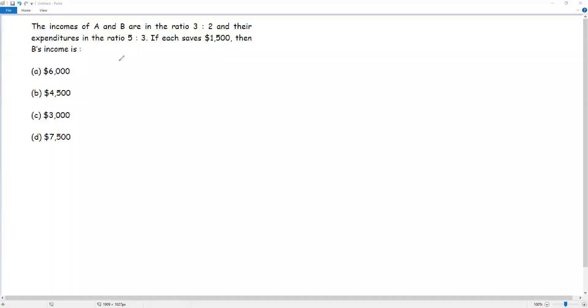The incomes of A and B are in the ratio 3 to 2 and their expenditures in the ratio 5 to 3. If each saves $1500, then B's income is. From the given information we have to find the income of B.